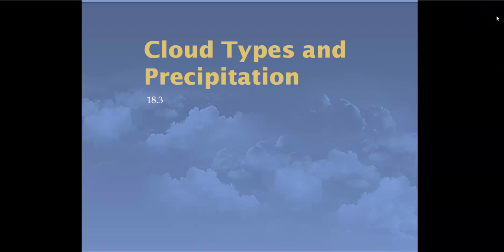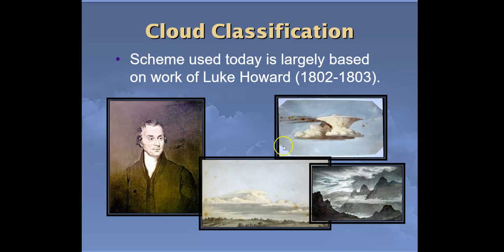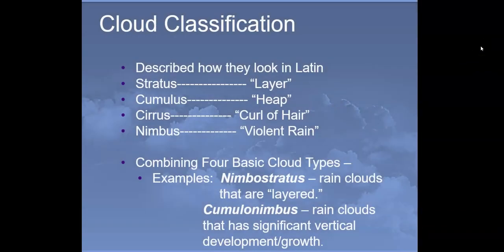Chapter 18, section 3 covers cloud types and precipitation. The cloud classification scheme we use today is largely based on the work of Luke Howard, who developed the cloud classification system in 1802 to 1803. He used Latin terms to describe how clouds look, because in the biological field Latin is used as a dead language that won't change.